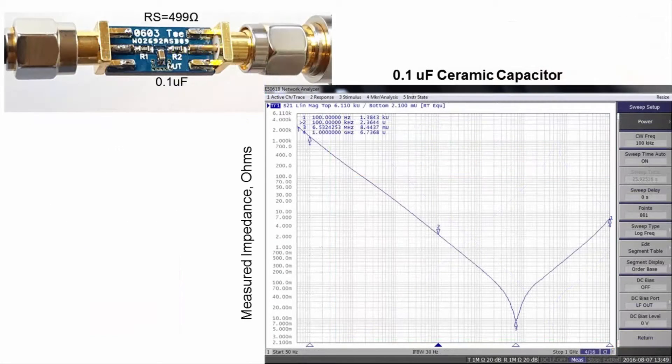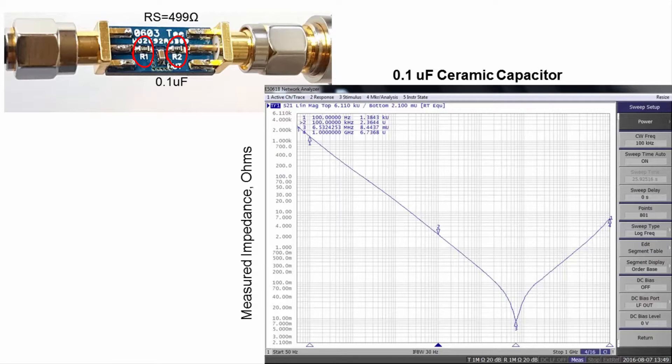These parasitics are eliminated by including the series resistors on the component mounting circuit board along with the device under test, improving the high frequency accuracy.